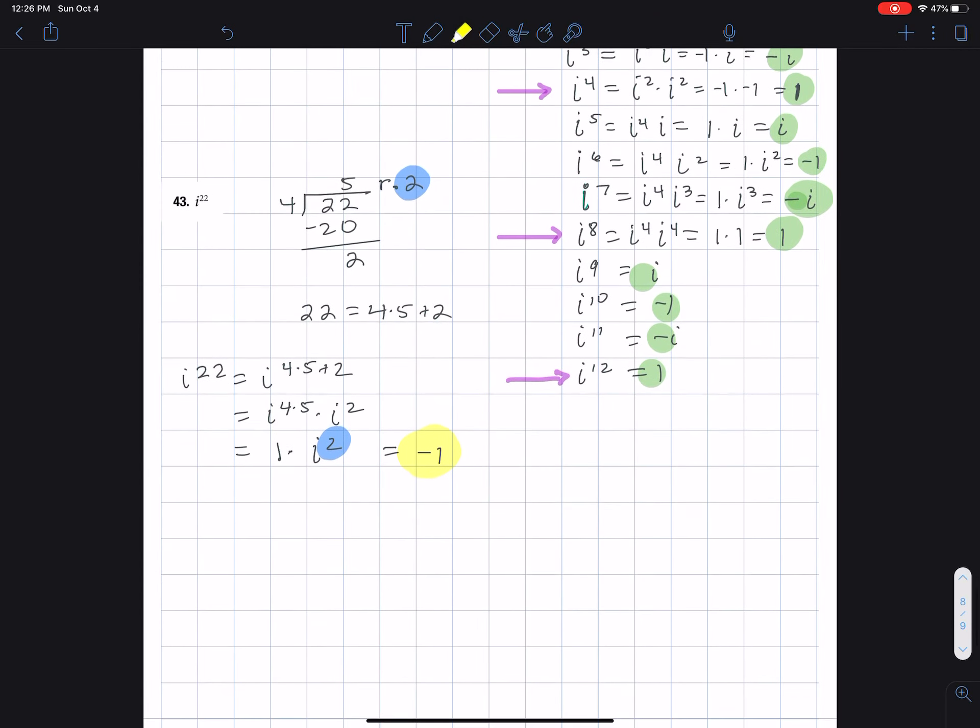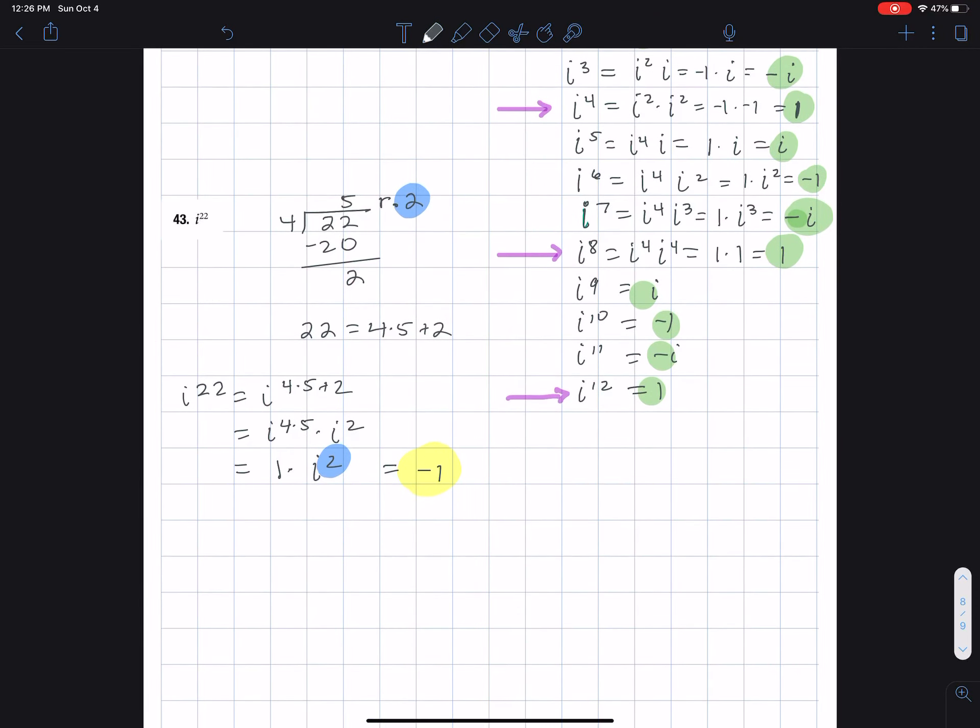This idea of finding the remainder has a name, it's called modulo. So we have the 22 modulo four is equal to two. So this is the remainder.